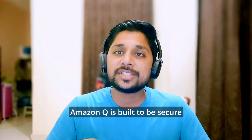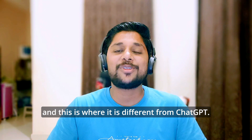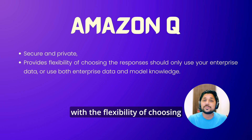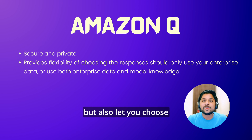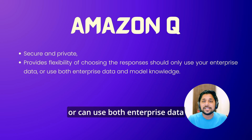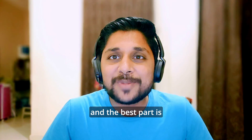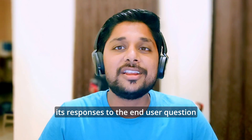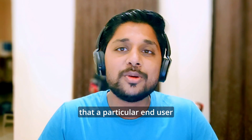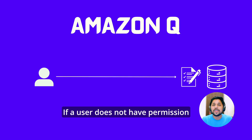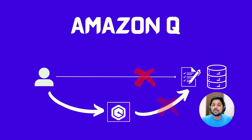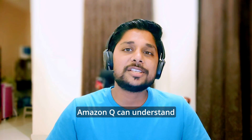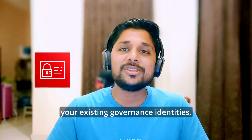Amazon Q is built to be secure and private, and this is where it is different from ChatGPT. It not only provides you with the flexibility of choosing what multiple data sources should be used to respond to user queries, but also lets you choose whether the responses should only use enterprise data or can use both enterprise data as well as Amazon Q model knowledge. Amazon Q can understand and respect your existing governance identities, roles and permissions.